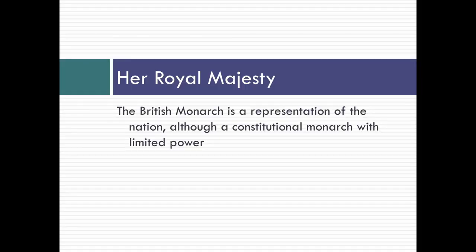The first thing we need to know about Britain in the 20th century is that for many years, Britain had been represented by and ruled by a monarch. And the British monarchy, by the end of the 19th century and the beginning of the 20th century, was not an absolute ruler as we tend to think of kings and queens, but a representation of the nation — a constitutional monarch with limited powers.